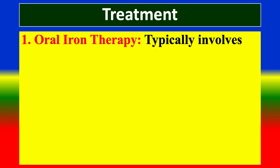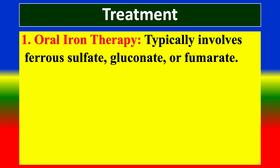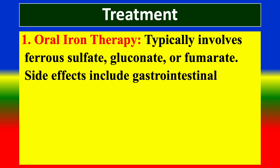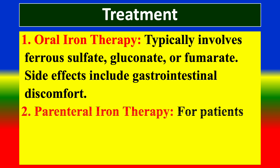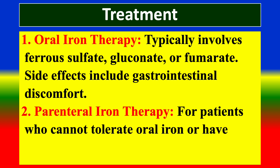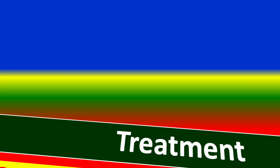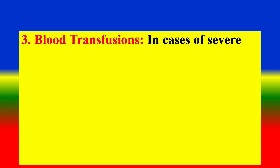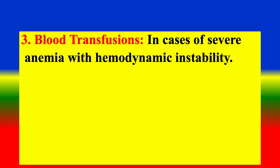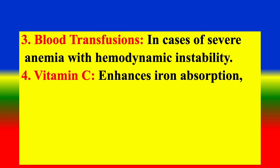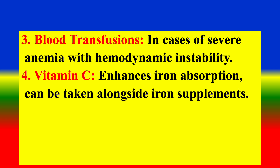Treatment: Oral iron therapy typically involves ferrous sulfate, gluconate, or fumarate, with side effects including gastrointestinal discomfort. Second, parenteral iron therapy for patients who cannot tolerate oral iron or have severe deficiency. Third, blood transfusion in cases of severe anemia with hemodynamic instability. Fourth, vitamin C to enhance iron absorption, which can be taken alongside iron supplements.